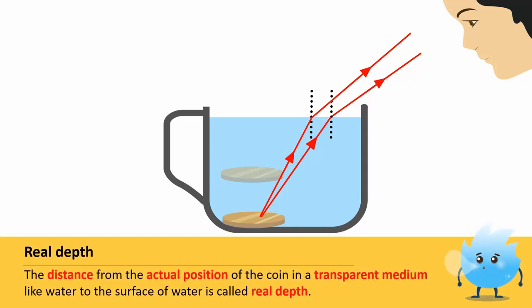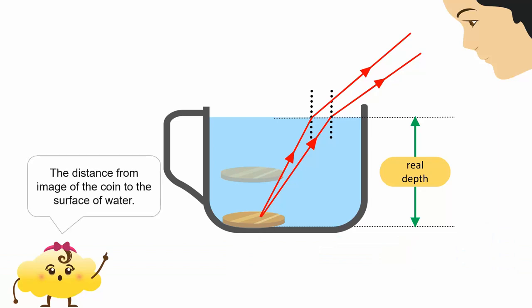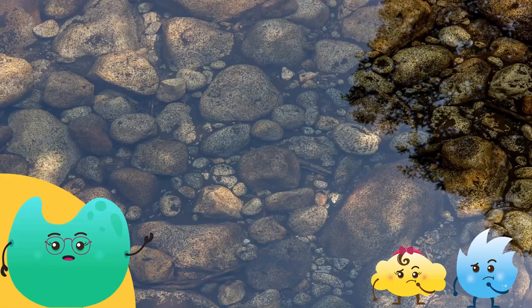The distance from the actual position of the coin in a transparent medium like water to the surface of water is called real depth. The distance from the image of an object in a transparent medium like water to the surface of water is called apparent depth. This is why a swimming pool appears less deep than it actually is.